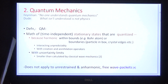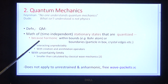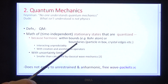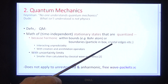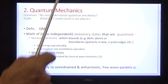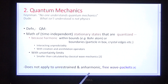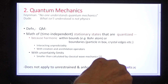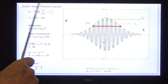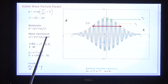Let's go on to quantum mechanics. We define it as the math of stationary states that are quantized. Why are they quantized? Because they are harmonic within bounds, as in the ball atom, or boundary, as in the particle in a box or crystal edges. They interact unpredictably with creation and annihilation operators and with uncertainty limits described by Heisenberg. But notice that these stationary states do not apply to the electron in the electron microscope, which is unrestrained and harmonic and is described by free wave packets.